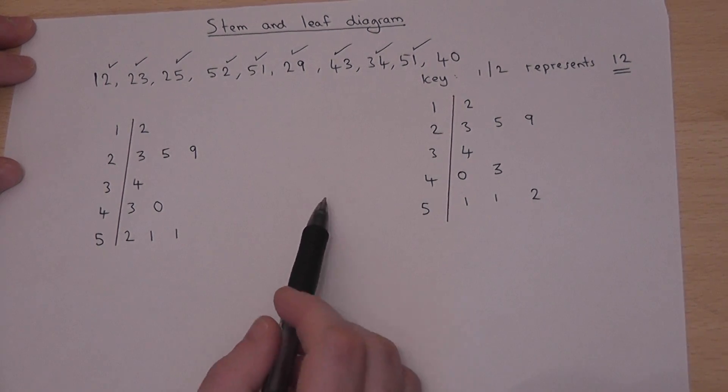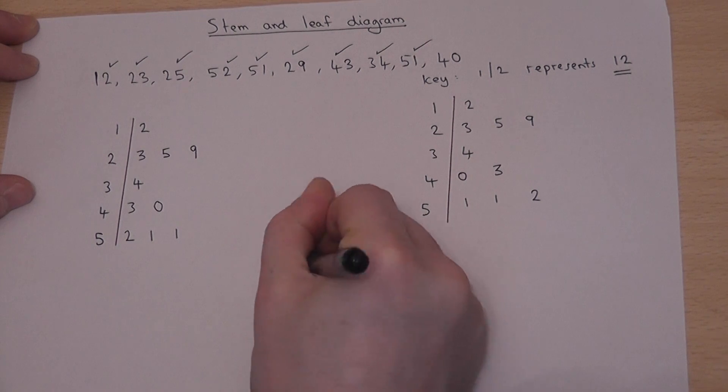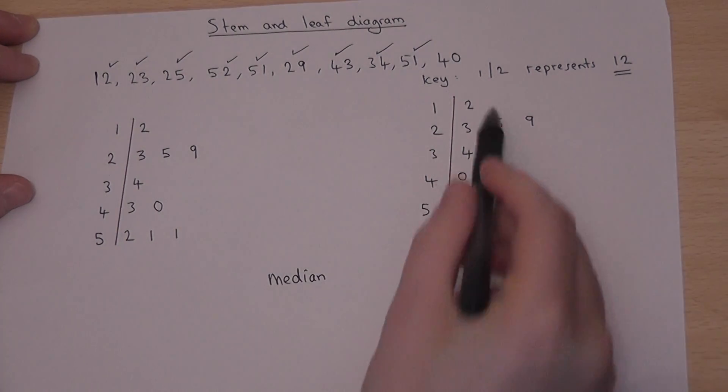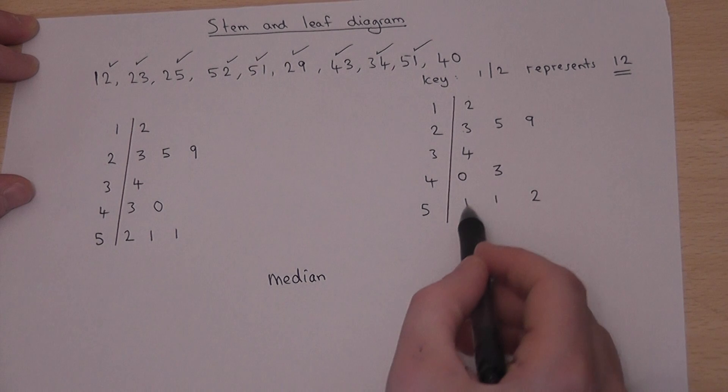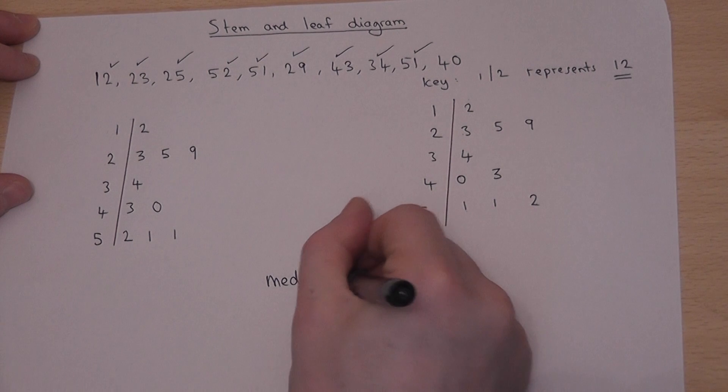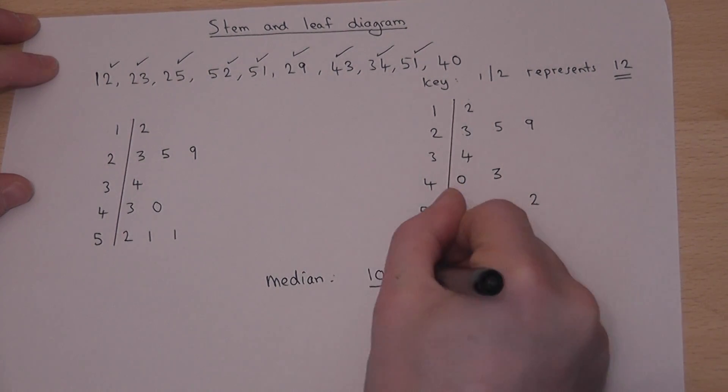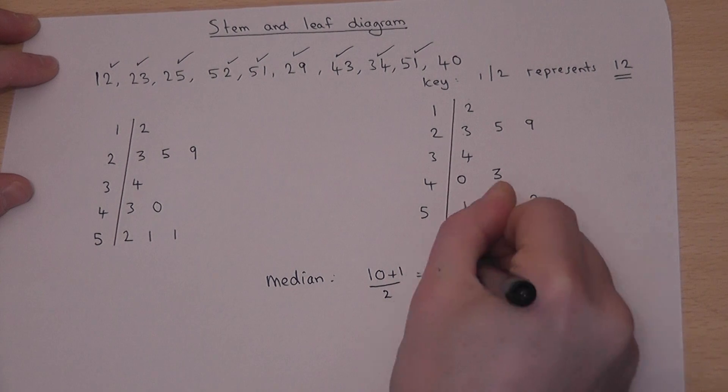To finish off with, we could then use this to find the median once it's been ordered. Now 1, 2, 3, 4, 5, 6, 7, 8, 9, 10. There are 10 numbers there. So to find the median, we do 10 plus 1 over 2, which is the 5.5th number.